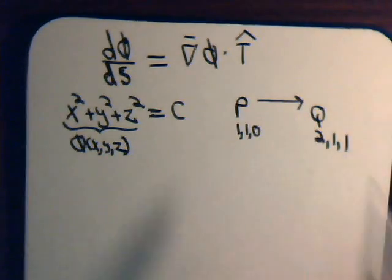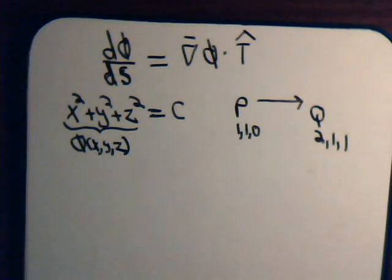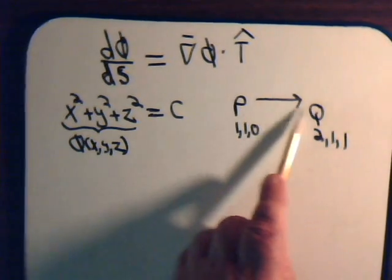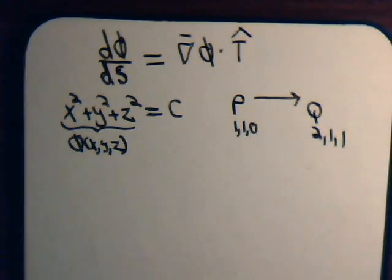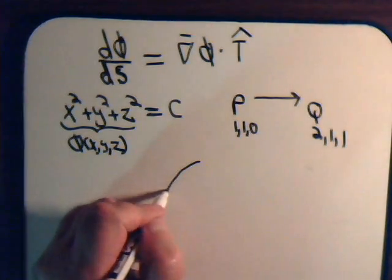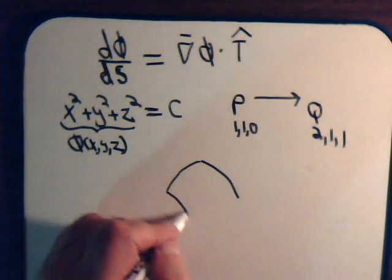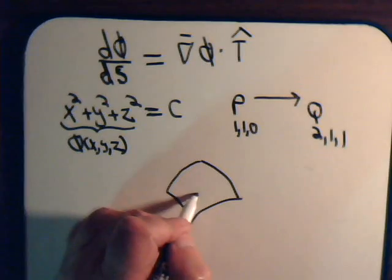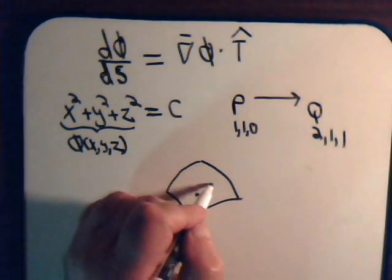As we do that, what is the rate of change of our scalar as we're moving in this direction from p to q? So imagine that we have some surface on the sphere. Here is point p and here is point q.